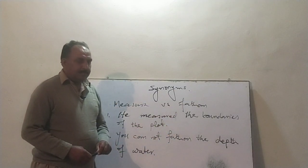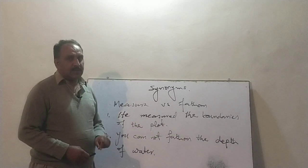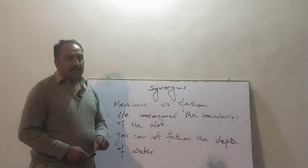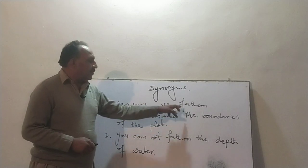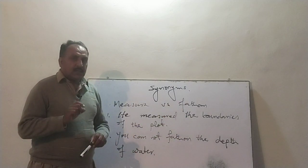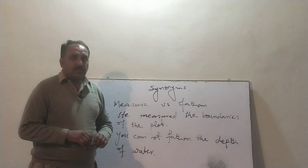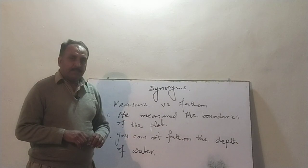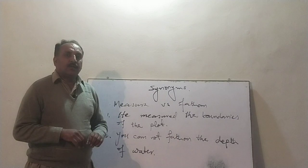'Measure' کہتے ہیں جب آپ خوشکی پہ کوئی چیز ناپتے ہیں، اور 'fathom' پانی میں جب آپ نیچے گہرائی ناپتے ہیں تو استعمال ہوتا ہے۔ Metaphorically, جو critical issue ہوتی ہے، کوئی بہت بڑا مسئلہ ہوتا ہے جس کی سنگینی بہت زیادہ ہو، تو ہم اس کے لیے بھی 'fathom' استعمال کرتے ہیں — for example: 'You can't fathom the depth of this problem,' it means you can't understand this problem.